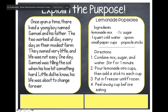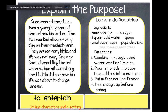'Once upon a time, there lived a young boy named Samuel and his father. The two worked all day, every day on their modest farm. They owned very little, and life was not easy. One day, Samuel was tilling the soil when his hoe hit something hard. Little did he know, his life was about to change forever.' It starts with 'once upon a time,' so we know this is probably a fiction story. So this one is meant to entertain us — it has characters and a setting.